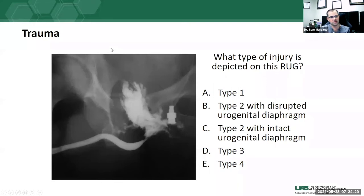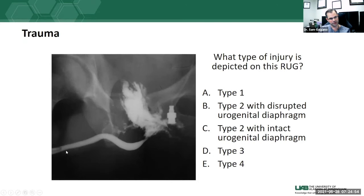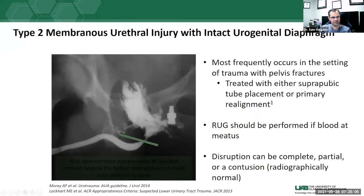Urethral trauma is probably the most tested topic on radiology boards. Using the Goldman classification: on this retrograde urethrogram, we see retrograde filling with irregular extravasation clearly not in the bladder or urethra. This is a type two membranous urethral injury with an intact urogenital diaphragm — contrast extravasates above the urogenital diaphragm but not below. This most frequently occurs with pelvic fractures and can be treated with suprapubic tube placement or primary realignment. The indication for a retrograde urethrogram in trauma is typically blood at the urethral meatus.